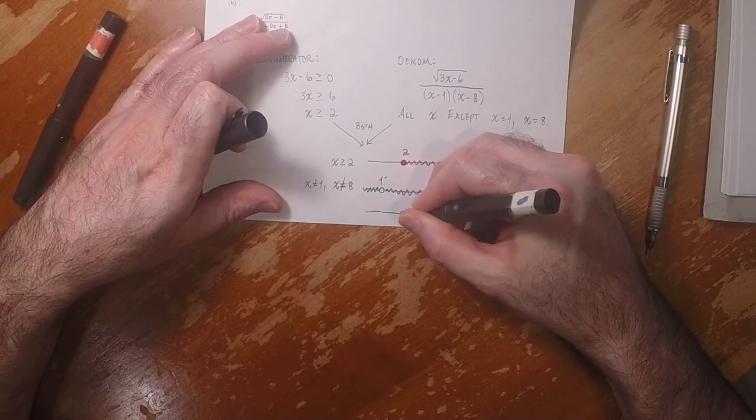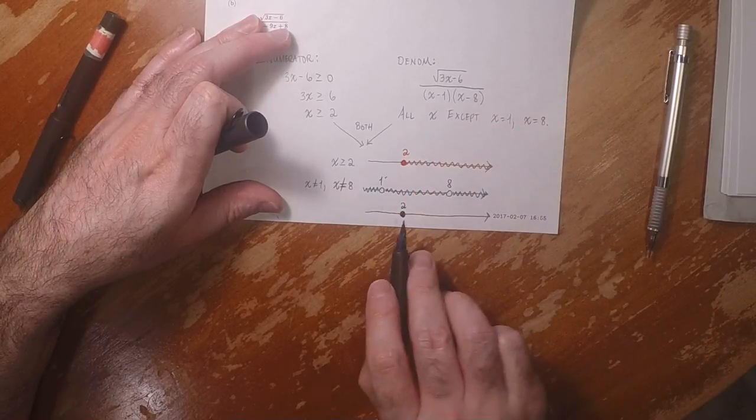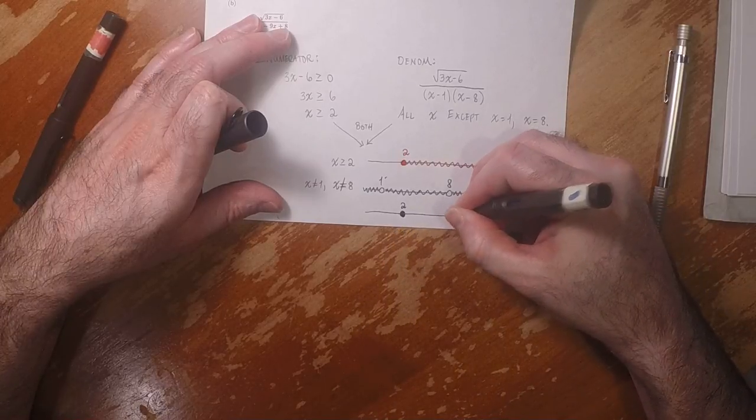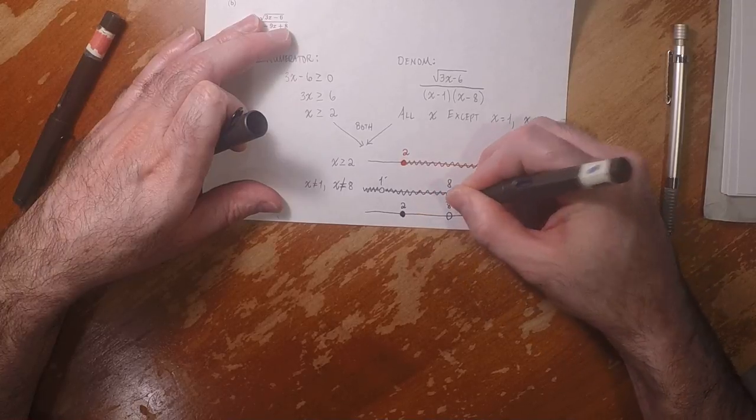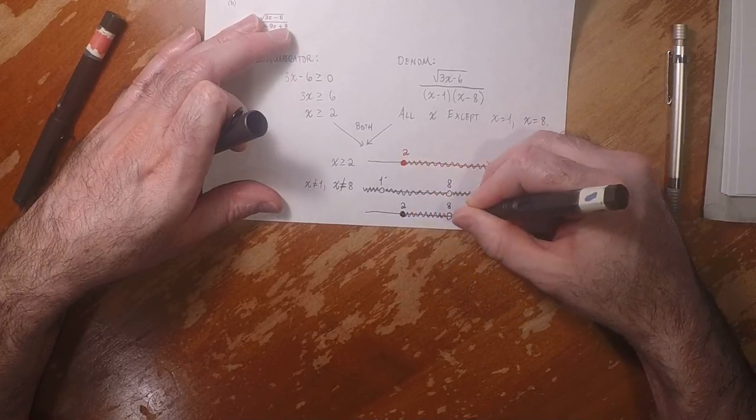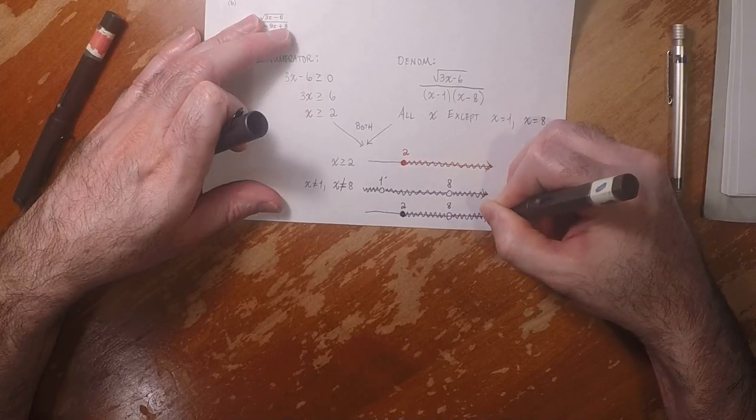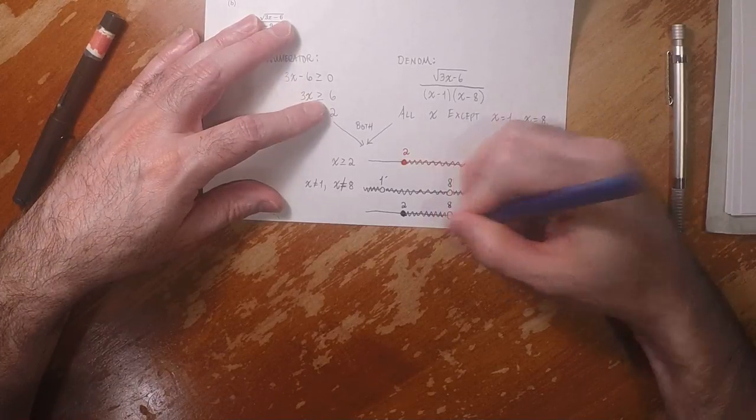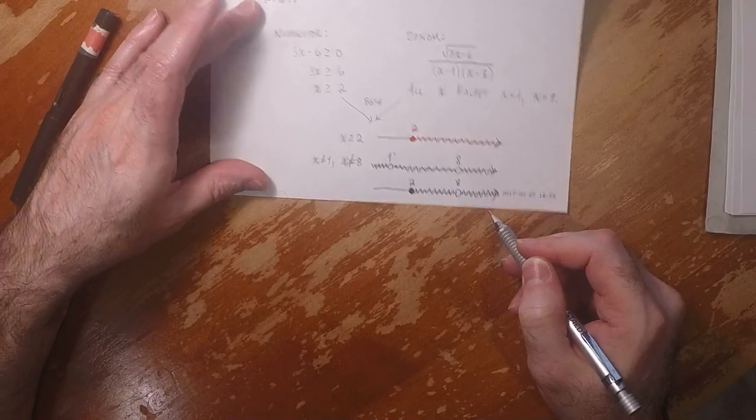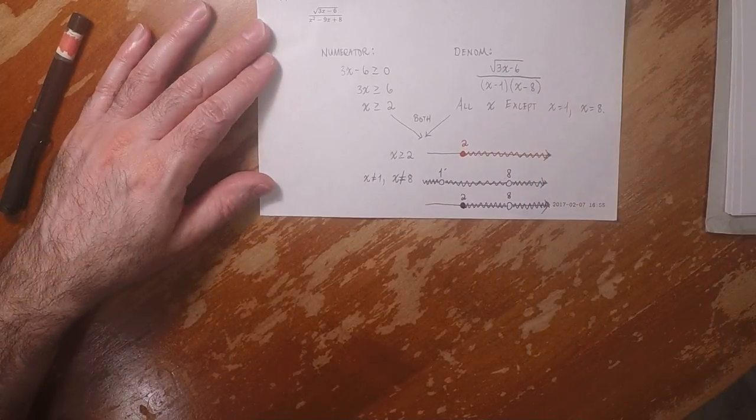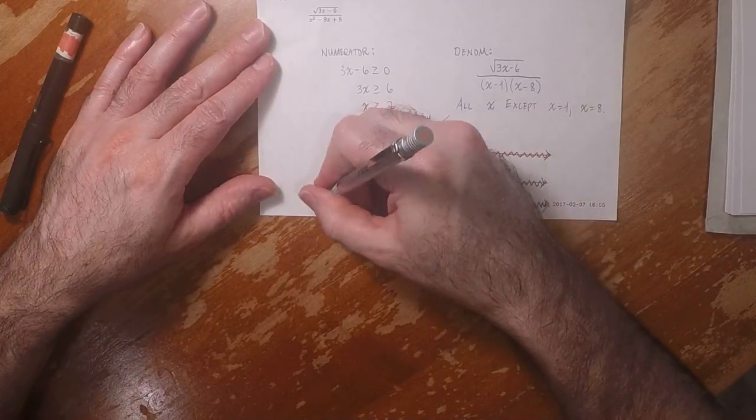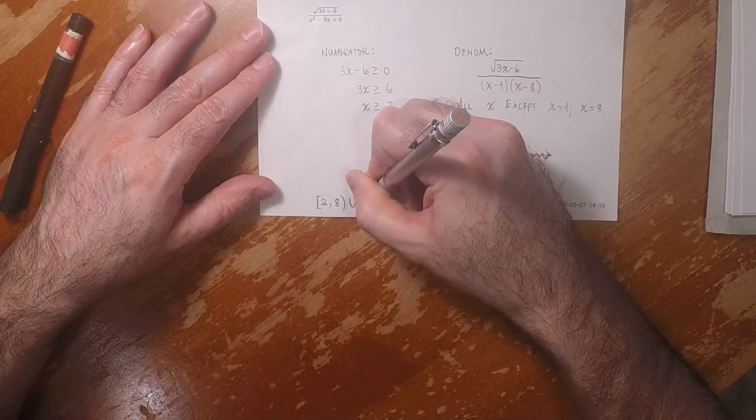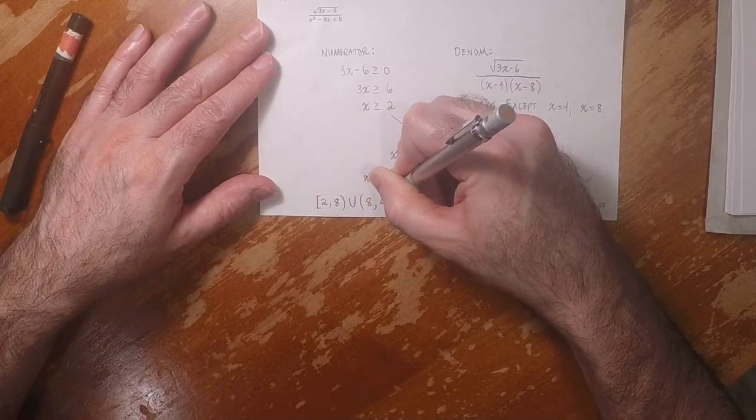And then we have red and green together for a while until we briefly don't get green at 8, and then we have red and green for the rest of the time. So that's the answer as a plot, and in interval notation the answer is 2 to 8 with 8 open, union 8 to infinity.